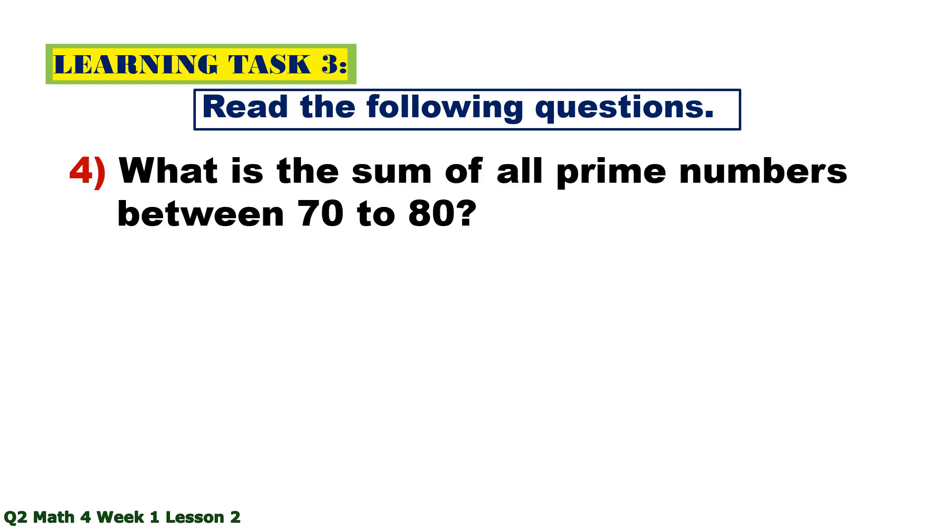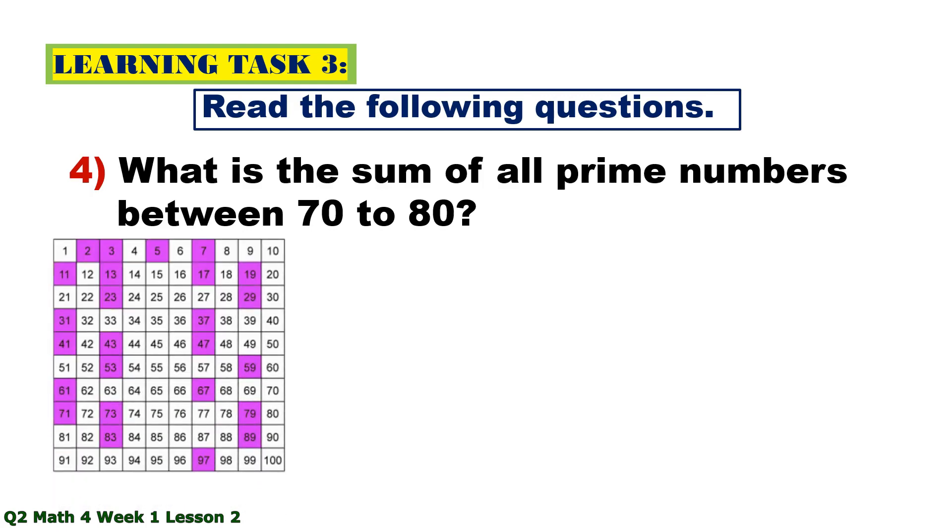Number 4. What is the sum of all prime numbers between 70 to 80? 71 plus 73 plus 79 equals 223.